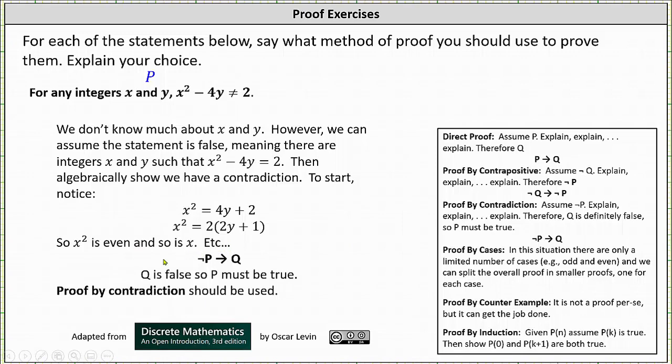This proof takes the form of if not p, then q, where q is false, therefore p, the given statement, is true. Proof by contradiction should be used. I hope you found this helpful.